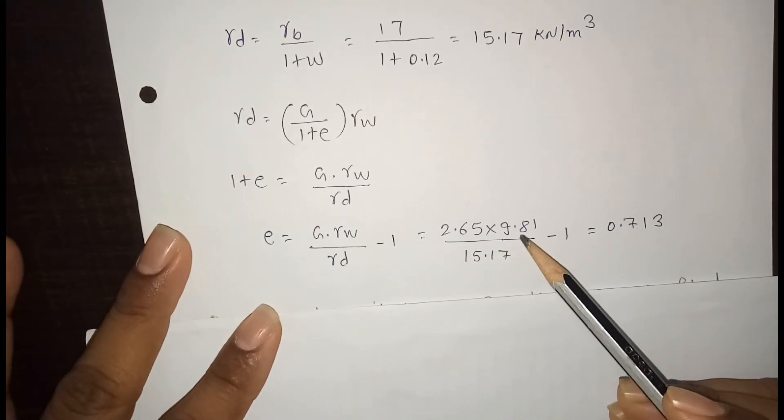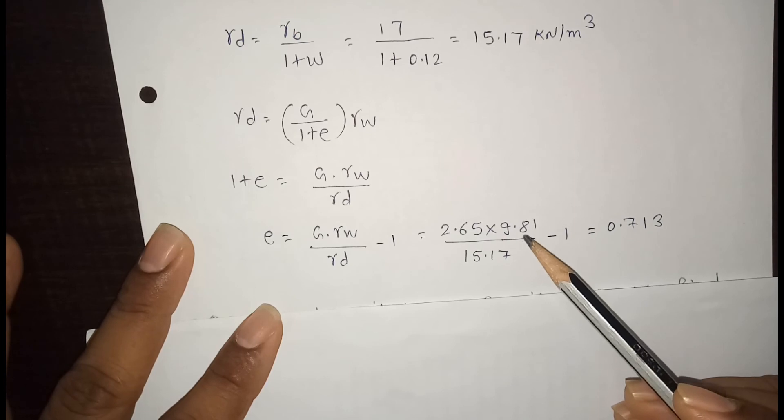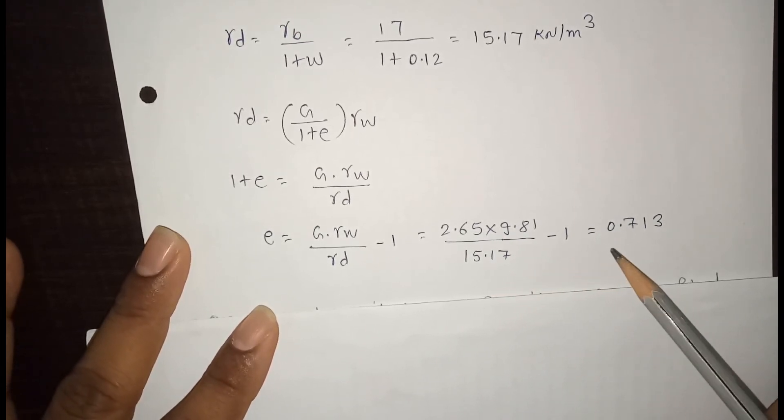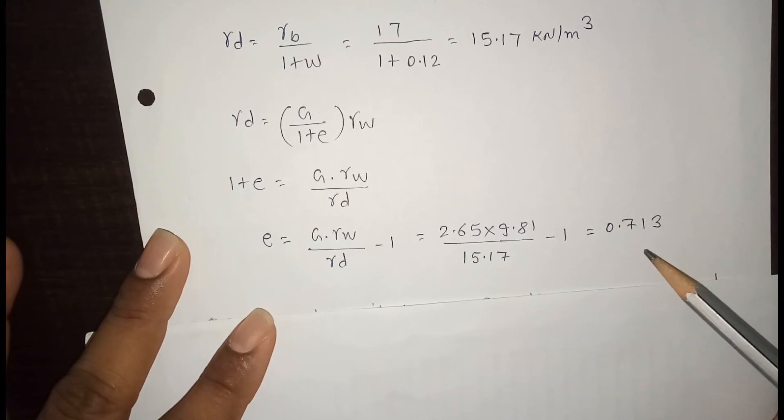So G is 2.65, gamma W is 9.81, and gamma D is 15.17 minus 1. That is, void ratio is 0.713.